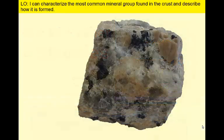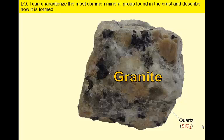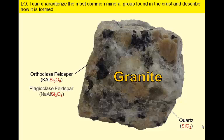Silicate minerals contain oxygen and silicon, often with one or more of the other six elements we just mentioned. Let's consider the rock granite, a common rock in Earth's crust. Granite contains several silicate minerals. Some, like quartz, have a relatively simple composition and are composed exclusively of oxygen and silicon. Granites also contain one or more varieties of the mineral feldspar, which will have additional elements such as potassium, sodium, and aluminum.